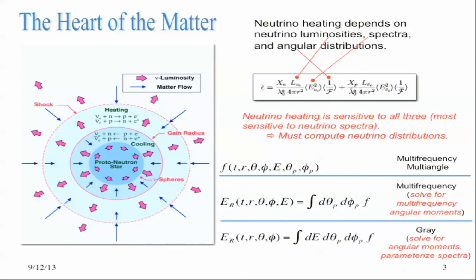And this protoneutron star is radiating neutrinos of all three flavors, electron, muon, and tau neutrinos and their anti-neutrino partners at the staggering rate of 10 to the 52 ergs per second. In SI units, that's 10 to the 45 watts. So you have a neutrino bulb here.